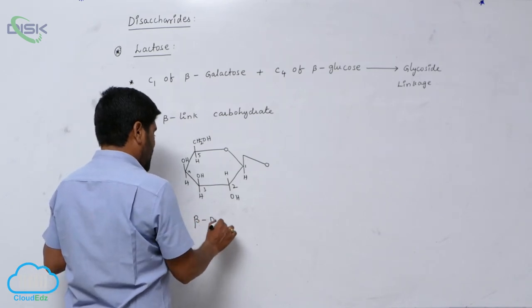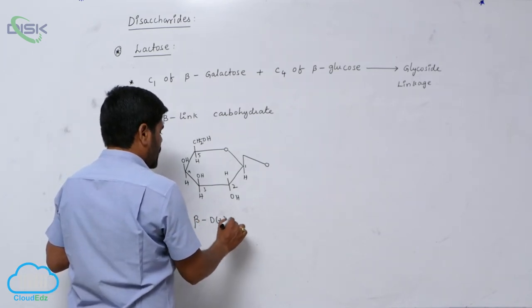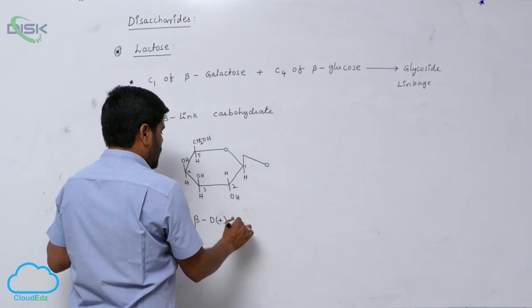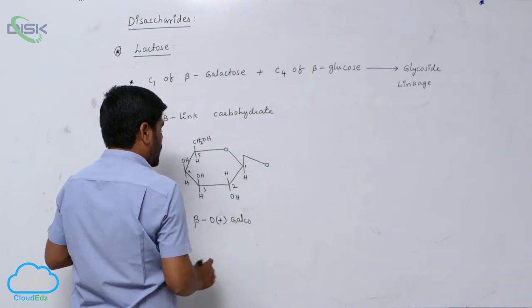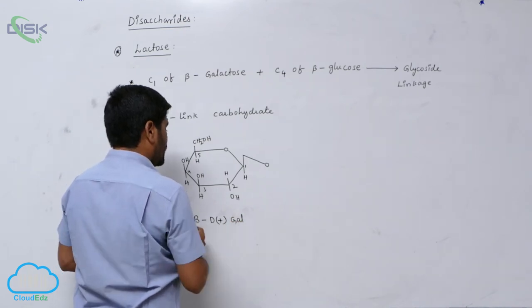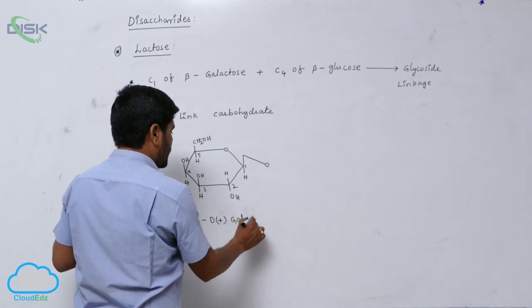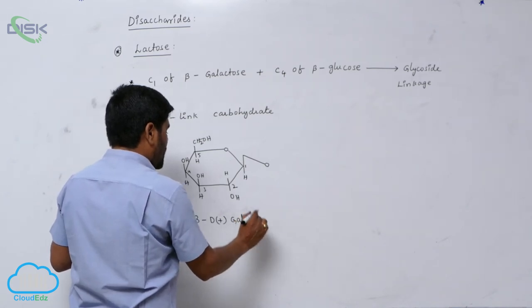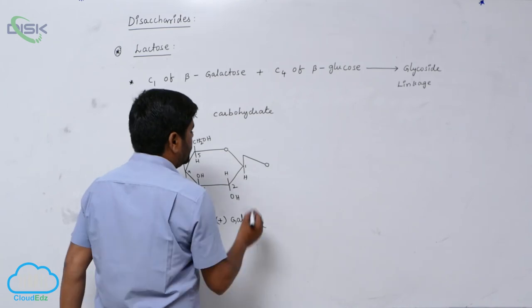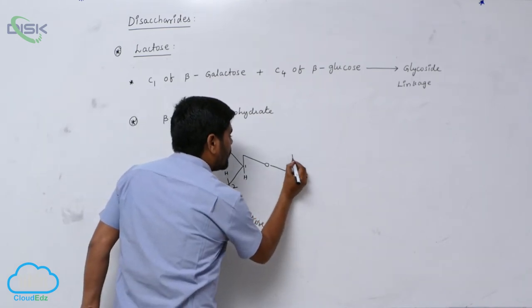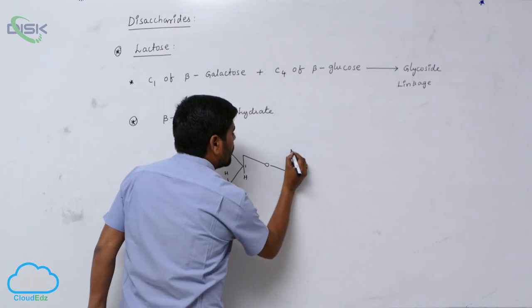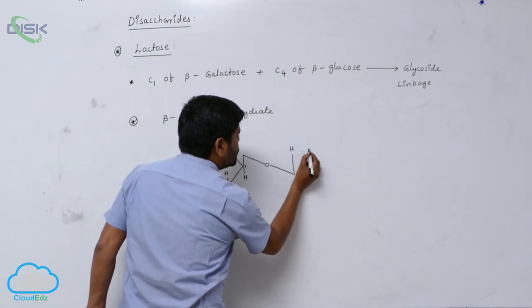This is known as what? D-plus galactose. Beta-D-plus galactose. Beta-D-plus galactose here is hydrogen.